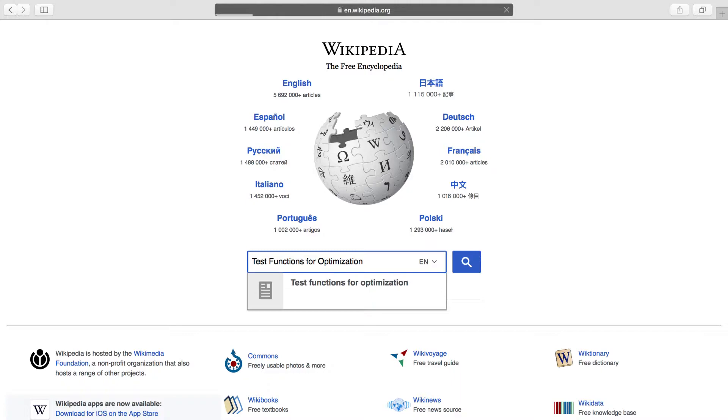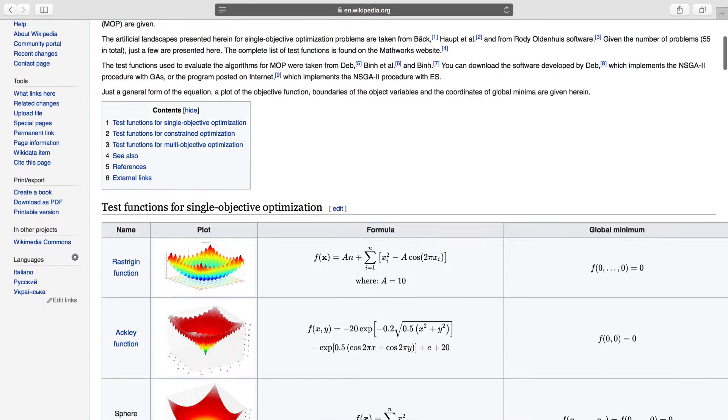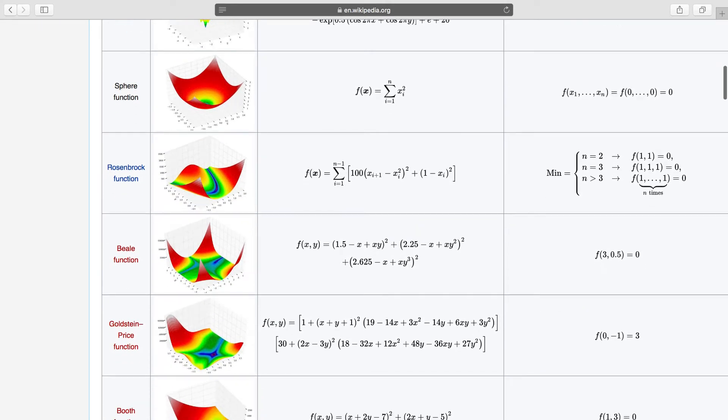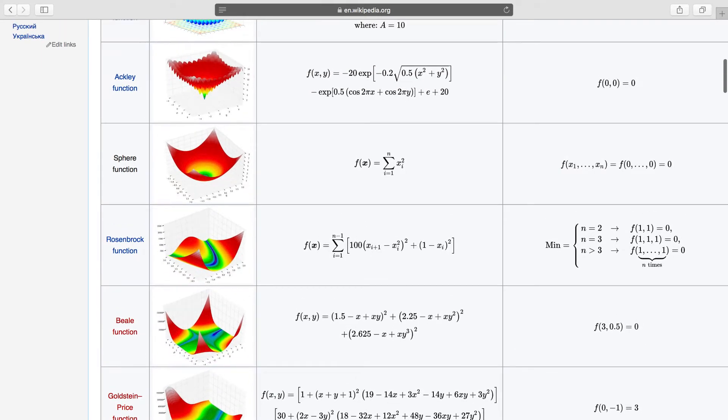In this page, many benchmark optimization problems are introduced, each of these problems could be considered. However, I'm going to use two functions: sphere and Rosenbrock.